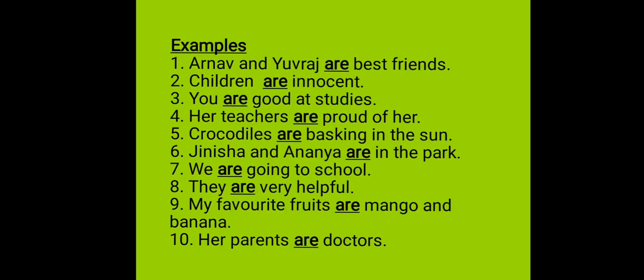For example, number one: Arnav and Yuvraj are best friends. Here, I am talking about two boys. That's why I am using Are over here. Next one is: children are innocent. Children is a plural form of child. So I am using Are here. Number three: you are good at studies. You is a plural pronoun. So I am using Are here.